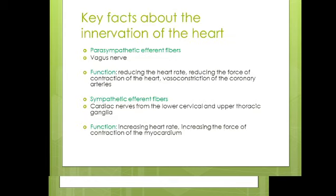The nodes of the Heart are linked to Parasympathetic fibres via the Vagus Nerve, which is used in Nerve Supply. This nerve process is very important to Nerve Supply.